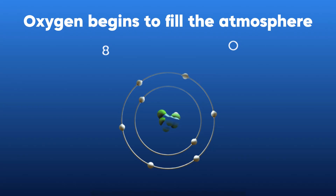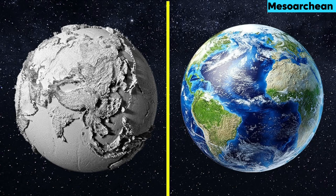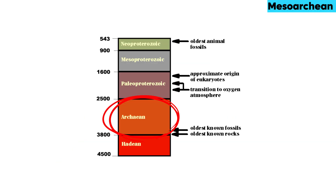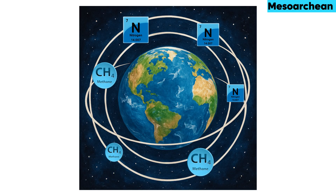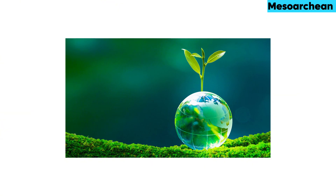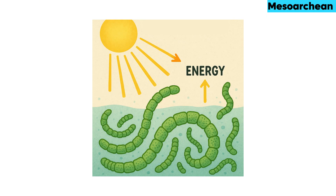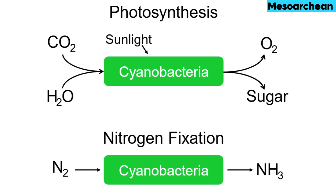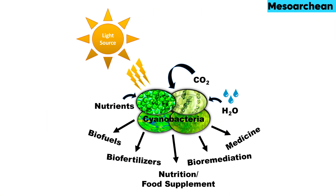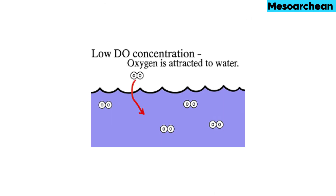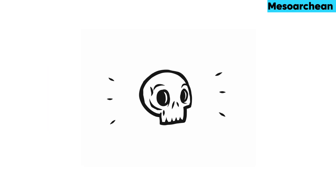Oxygen begins to fill the atmosphere. At the start of the Archean Eon, Earth was without free oxygen — water molecules had oxygen but it was bonded with hydrogen. Earth's atmosphere was mostly methane and nitrogen. The only life forms that could exist were anaerobic cyanobacteria, which converted sunlight to energy and carried out photosynthesis in the oceans, metabolizing their own food. As a waste product, cyanobacteria released oxygen. Over time, free oxygen built up in the oceans, but oxygen poisoned cyanobacteria, threatening their very existence.